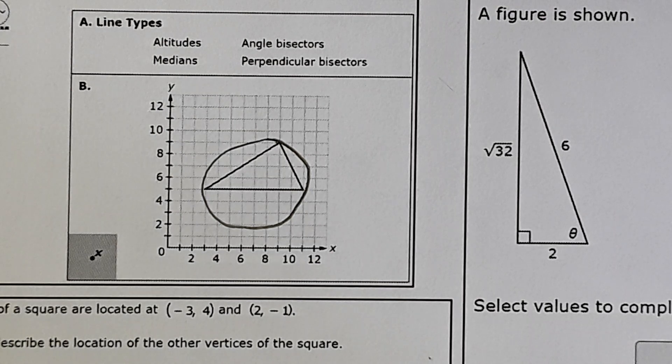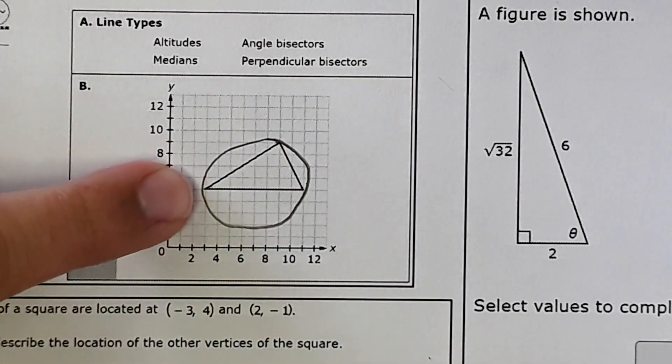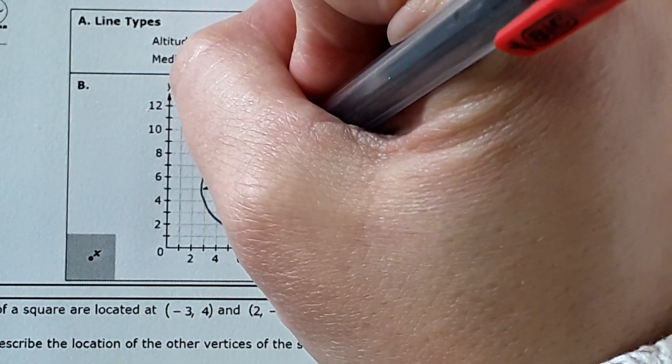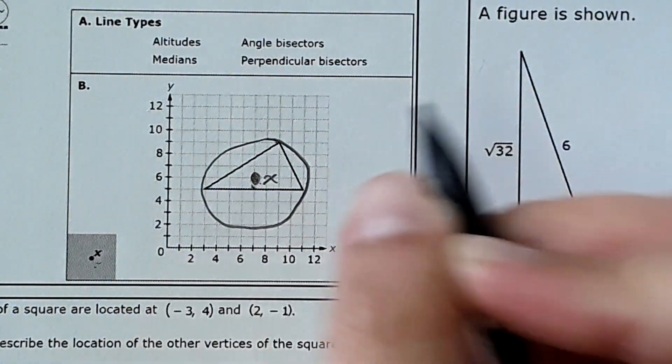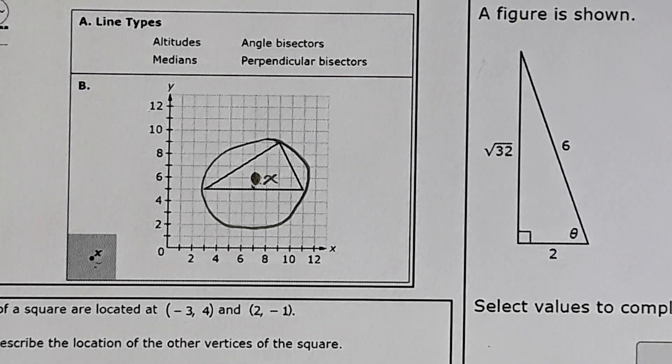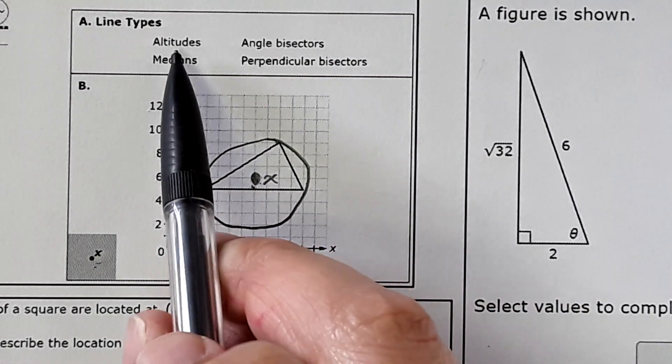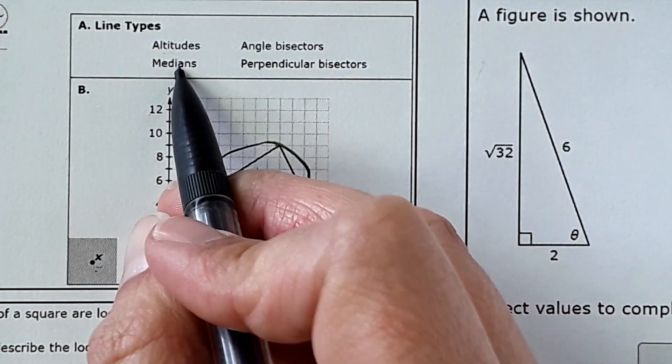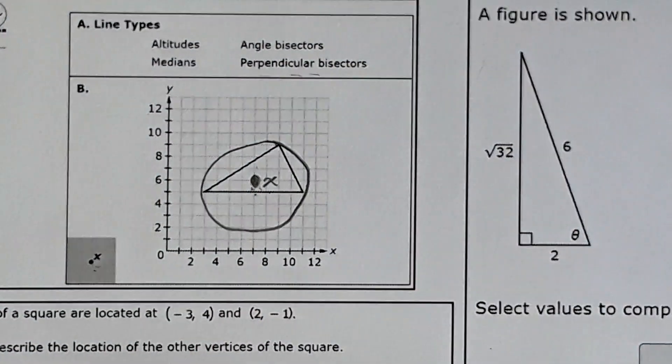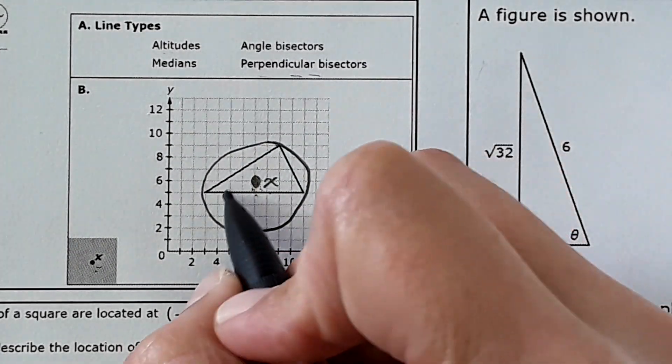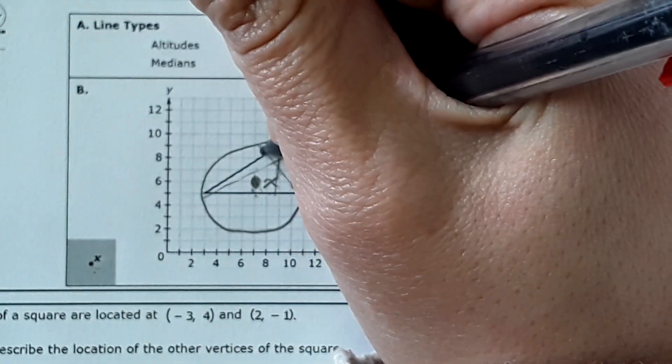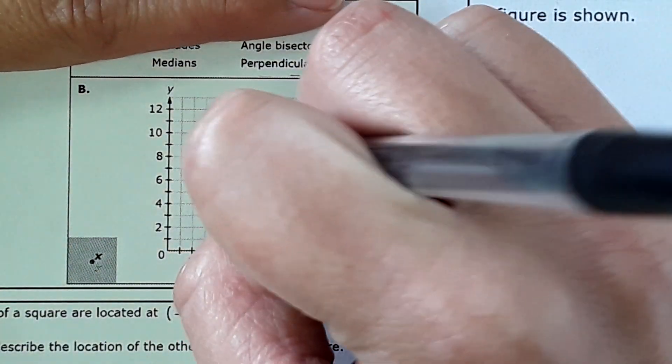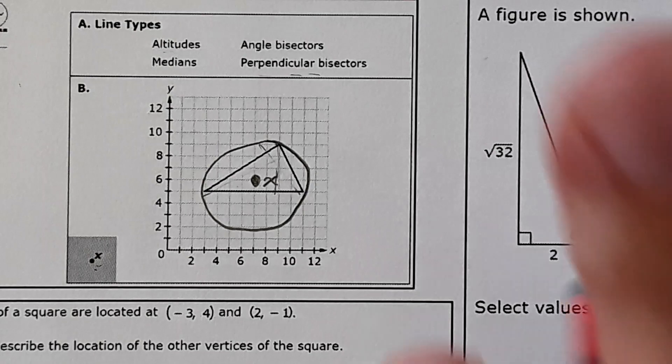It says select the line type Jalen uses to construct the circle and then drag point x to the location of the center of the circumscribed circle. So just based on what I drew, the center, just eyeballing it, would be right here. There's this little point with an x there you would drag and drop right there in the center. But it wants to know which of these lines, whether it be altitudes of the triangle, angle bisectors, medians, or perpendicular bisectors would intersect at that point. What you could do is draw these and see what intersects at that point. For example, you could draw an altitude here and an altitude here and an altitude here, but you can see that those don't intersect at that point.